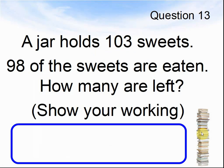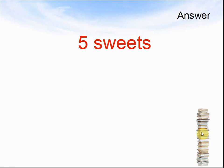Question 13. A jar holds 103 sweets. 98 of the sweets are eaten. How many are left? Show your working. Pause the video until you are ready for the answers. The answer was 5 sweets.